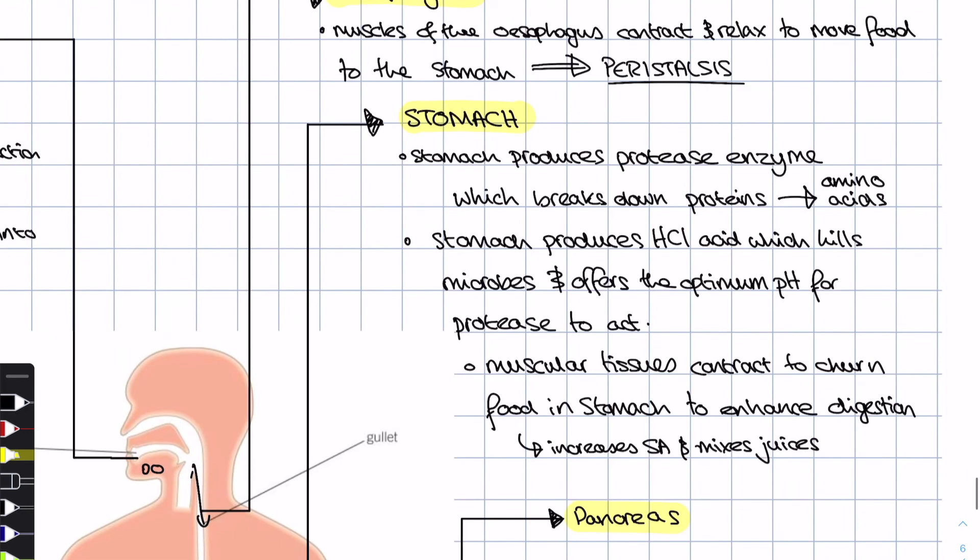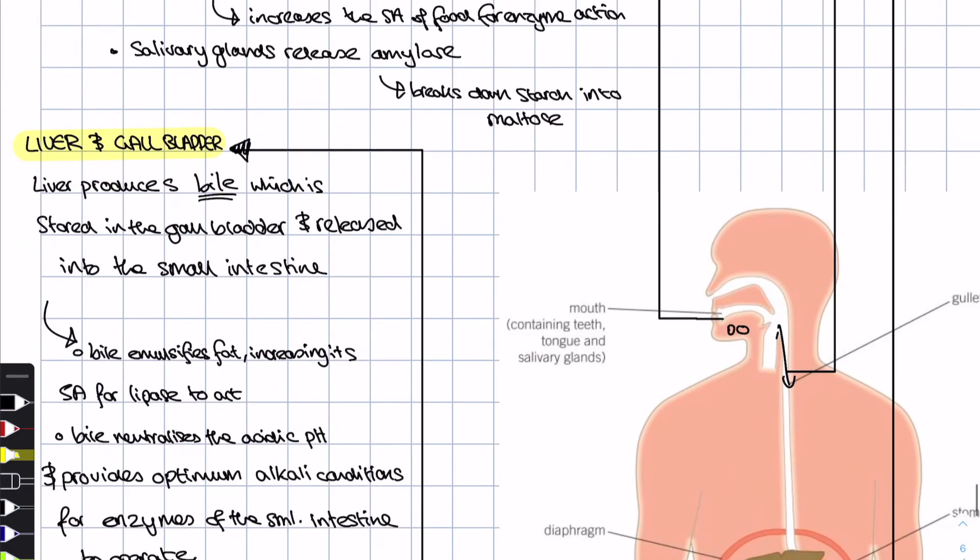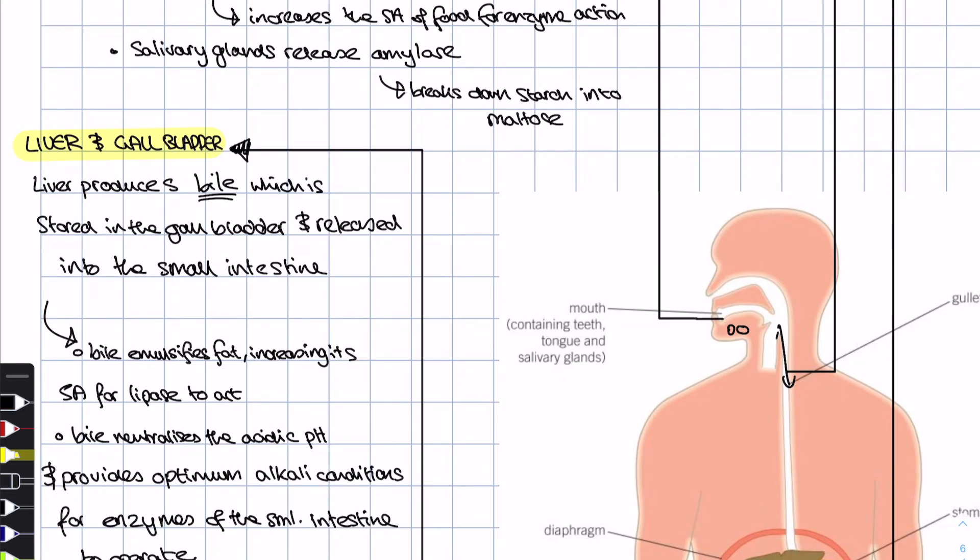Once it's moved through the esophagus, the food arrives in the stomach. We've talked a lot about the stomach already. The stomach produces that protease enzyme, which breaks down proteins into amino acids. Stomach also produces hydrochloric acid, which kills bacteria and gives the optimum pH for protease to work. And also the stomach contains muscular tissues, which contract, causing the food to churn, mixed with digestive juices, increasing its surface area, meaning that digestion works a lot better.